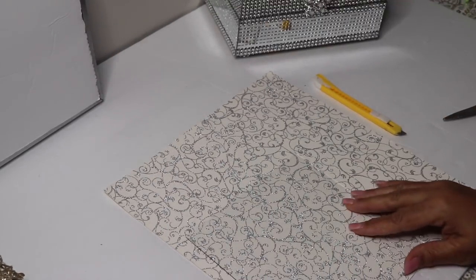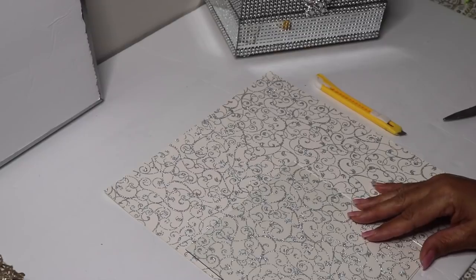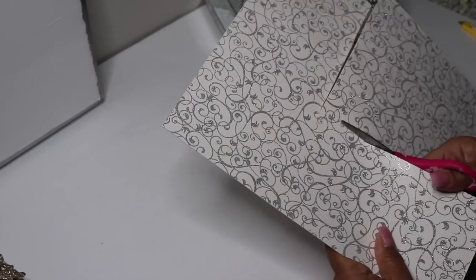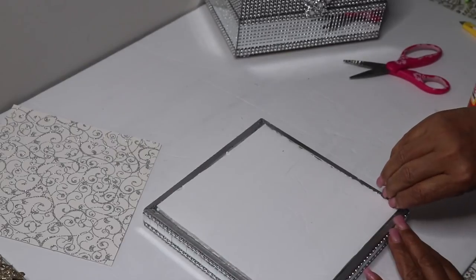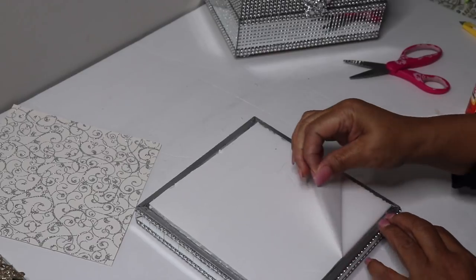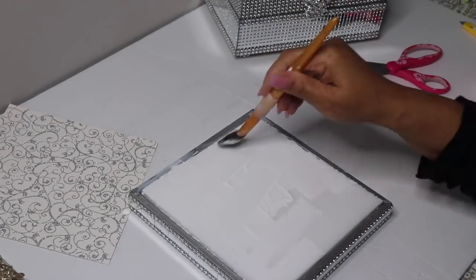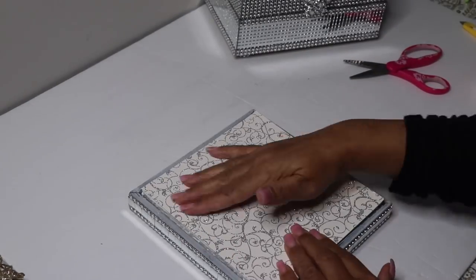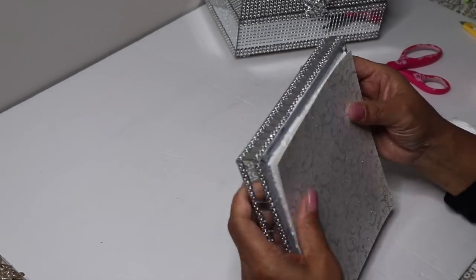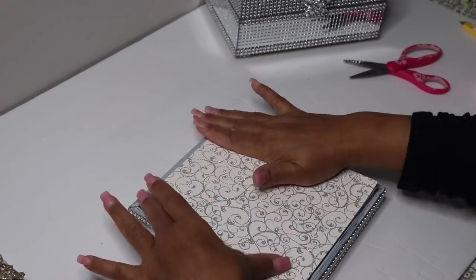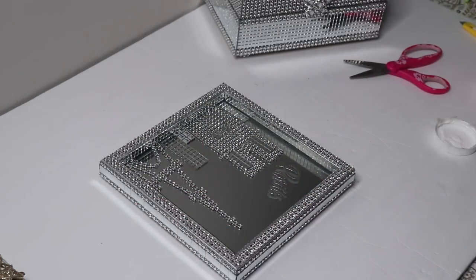Now I'll glue the decorative paper to the back of the lid. Again, I traced the glass onto the paper and then cut the shape out. I then removed the top layer of paper from the foam board and then glued the decorative paper on with Mod Podge. I flipped the lid over for added pressure and then let it dry.